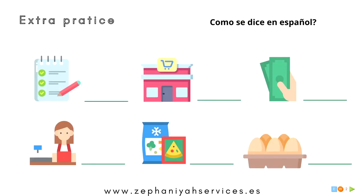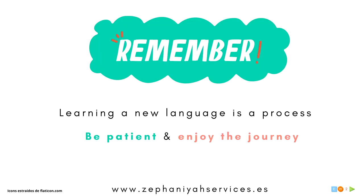There's more practice here. ¿Cómo se dice en español? How do you say in Spanish: eggs? Los huevos. Excellent. ¿Cómo se dice en español: frozen foods? Los congelados. So, this is for you. Enjoy and practice.